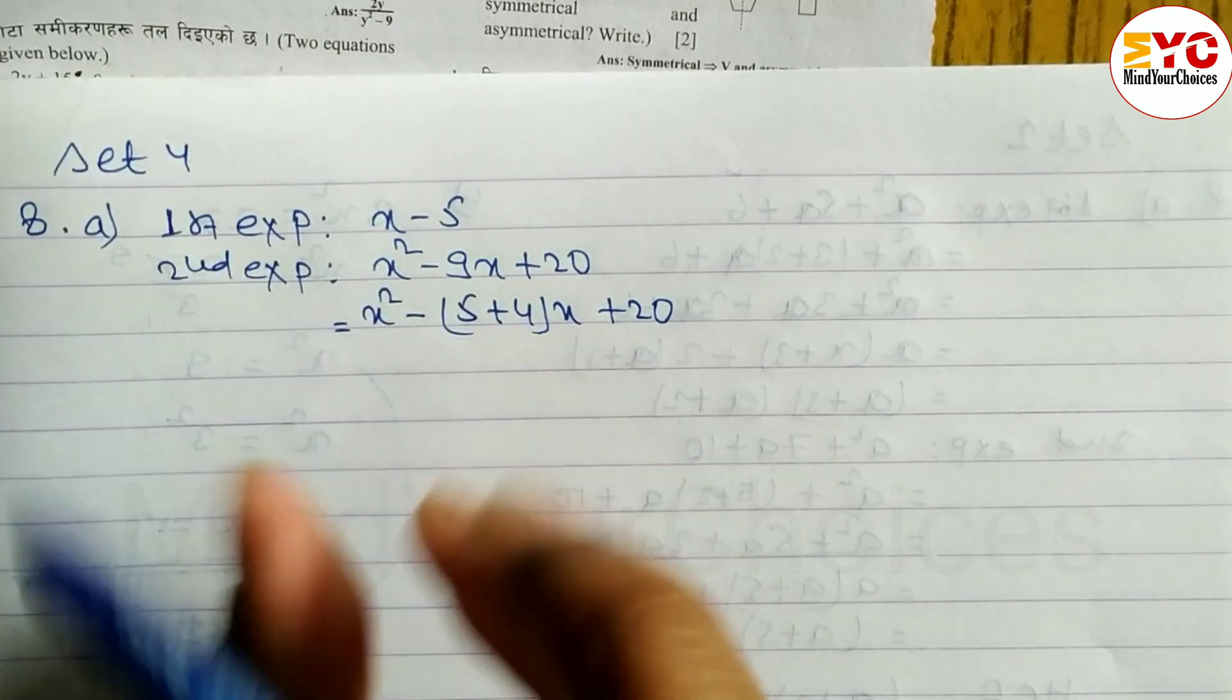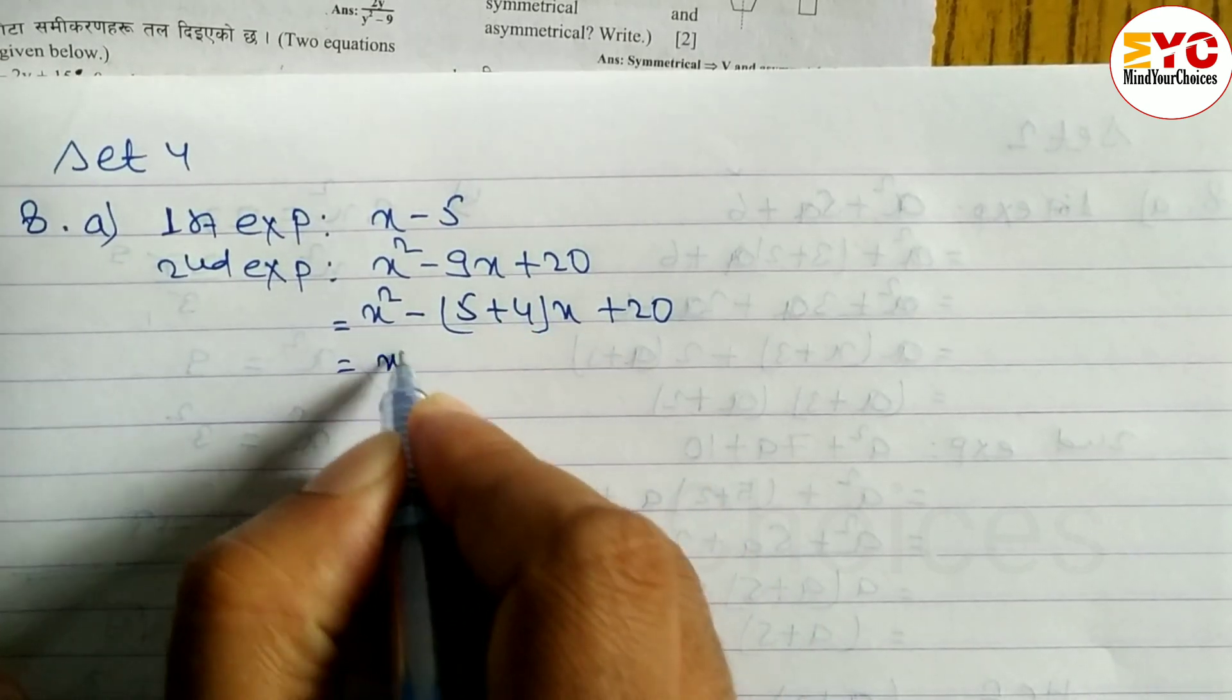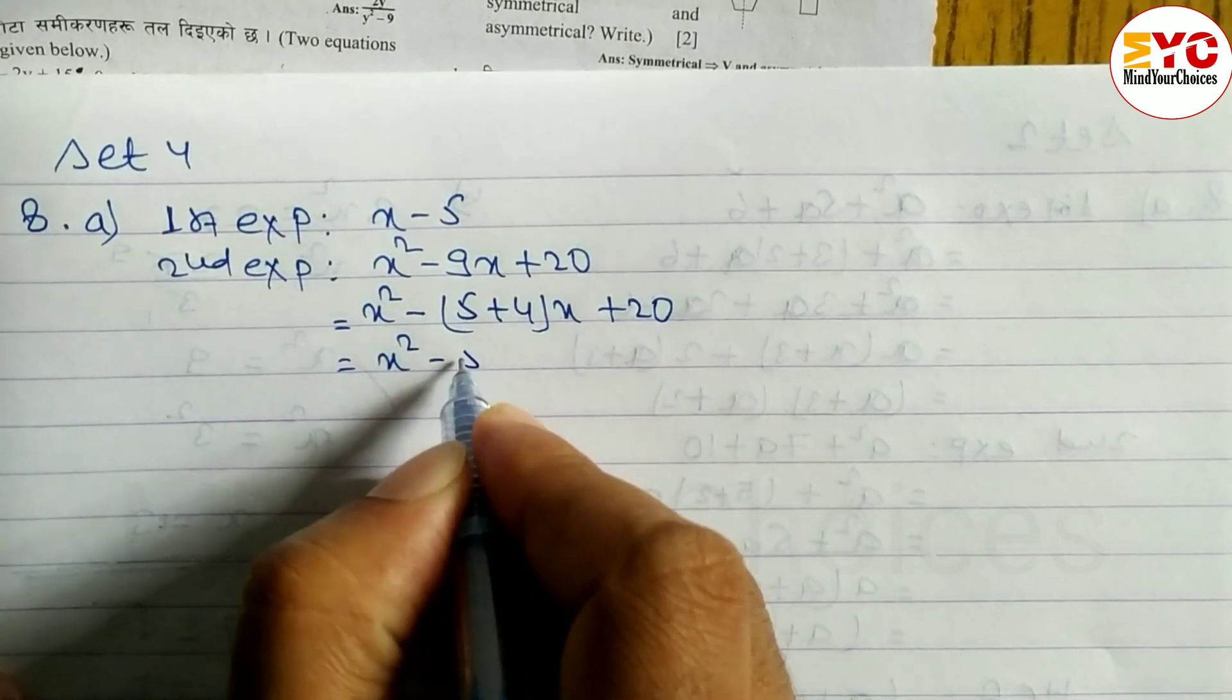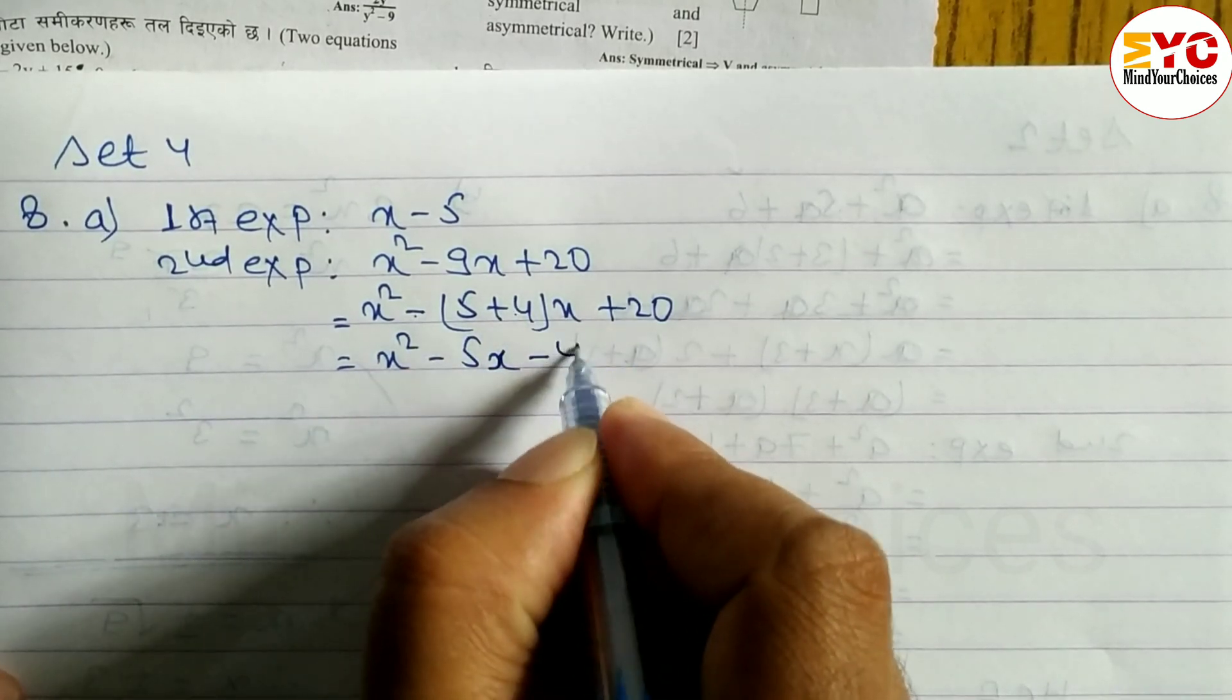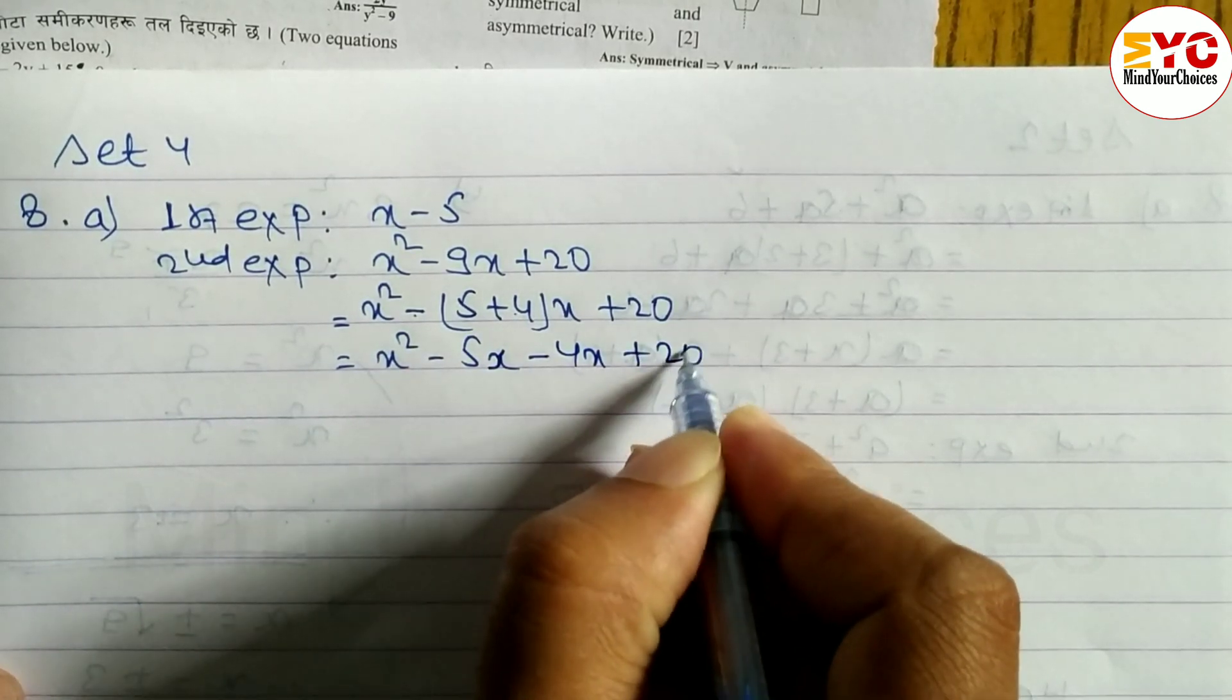5 plus 4 when we add what do we get? 9. So x-square minus 5 into x gives 5x, okay? Minus 4 into x gives 4x plus 20.